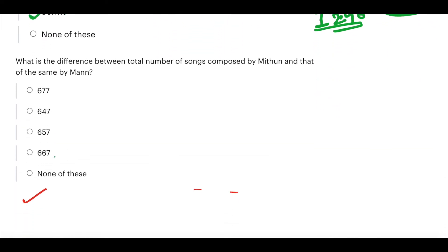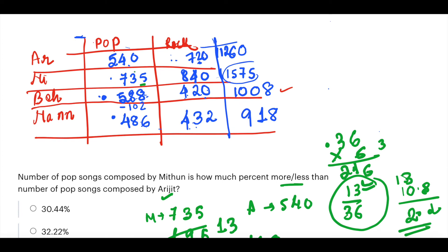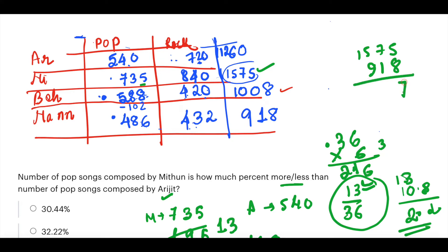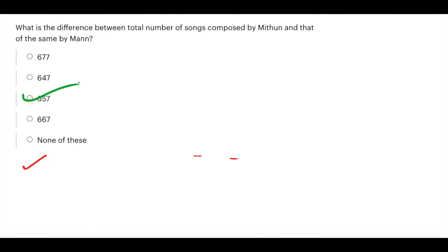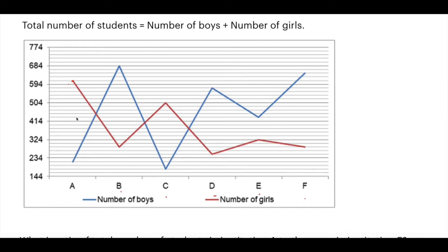Question 5: What is the difference between the total number of songs composed by Mithun and Man? Mithun = 1575, Man = 918. Difference = 1575 − 918 = 657. Option C is the answer.